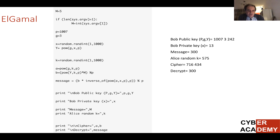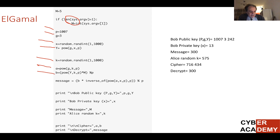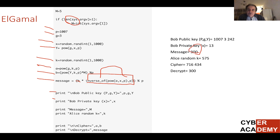Here is some Python code to implement this. The message is taken from a command line argument. A G value is specified, then a random X value is created and Y is worked out as G to the power of X mod P. We then take a random K, work out A and B, and recover the message using the modular inverse of A to the power of X — using an inverse mod function. The results show the original input value is correctly recovered, along with the cipher values A and B.